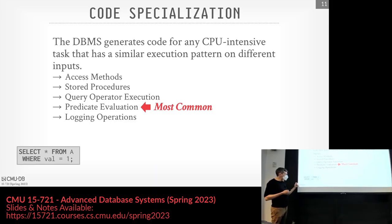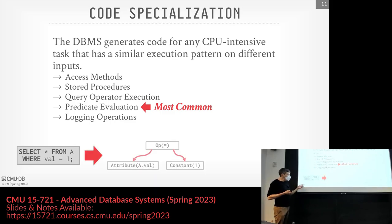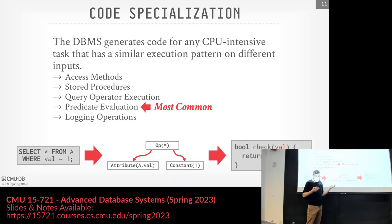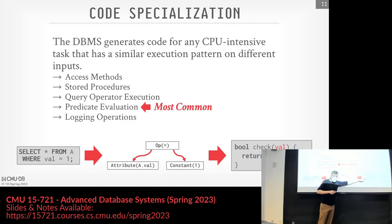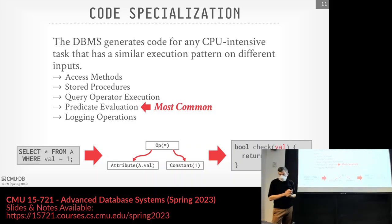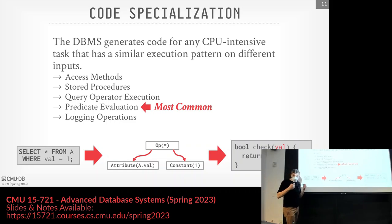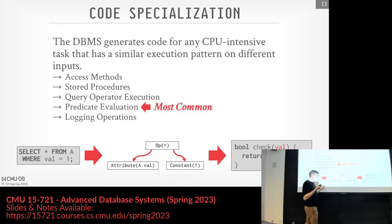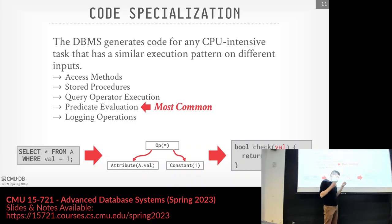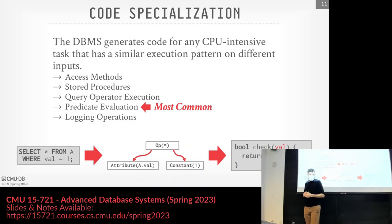A simple example: for a where clause 'value = 1' with a tree of equals, attribute, and constant, we want to generate a function that takes in some value and returns true if it equals one — machine code that does this so we don't have to traverse the tree. There are no security concerns here because the database system itself generates this code, not arbitrary outside input. We have to be careful not to clobber memory, but we don't have to worry about injected malicious code. Some systems that support UDFs written in C will run those in a sandbox as a separate process — Oracle does that; Postgres lets you write functions in C but doesn't sandbox them.